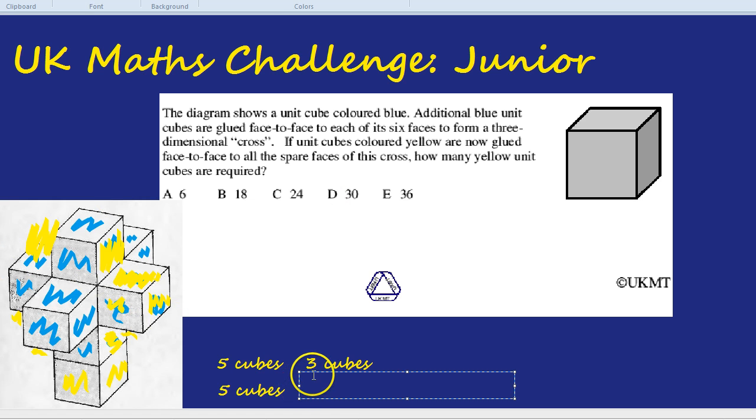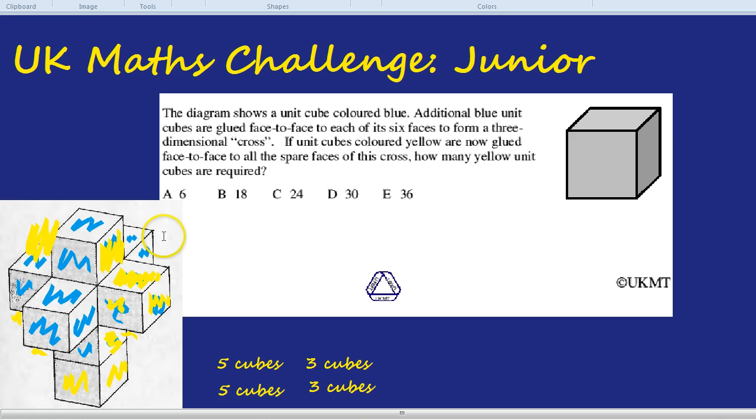So it's going to be symmetrical. Five cubes for the bottom, three cubes for the left and right, and five cubes for the top. What about the front and back cubes?